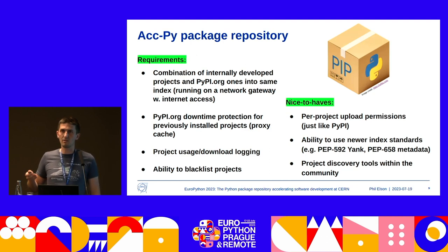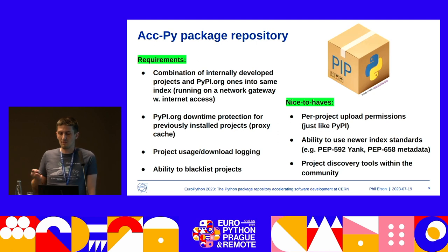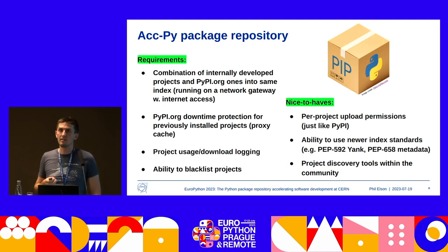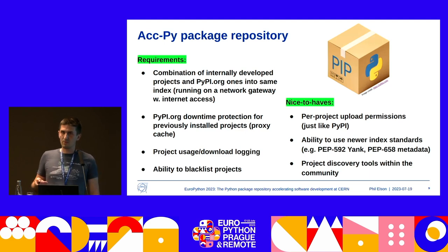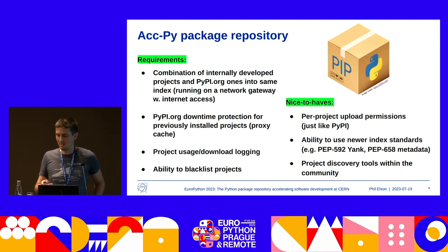Some other nice-to-haves: we'd like per-project upload permissions, just like you'd expect with PyPI. We want to benefit from newer index standards — PEP 592, which is the yank capability (actually more of a security requirement now), and PEP 658 for metadata extraction, which is an optimization on the PIP side. And we also want some kind of gateway where people can find out about projects in our environment, discover them, get READMEs, get links — generally have the experience you have with PyPI.